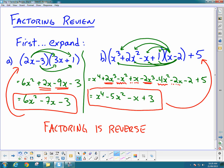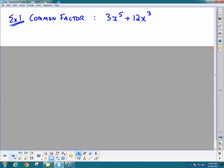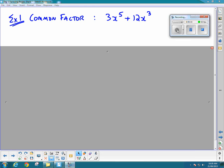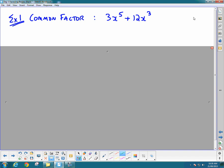The first type of factoring we do all the time is to always look for a common factor. That's going to make your life a lot easier, so never forget about it. Here we're finding a number that divides evenly into both terms. Three goes into both 3 and 12, but we also look for the x's.